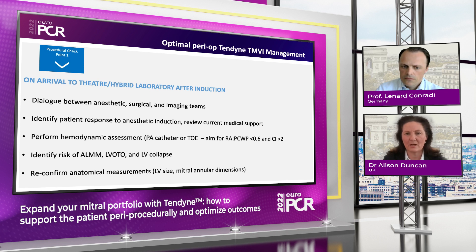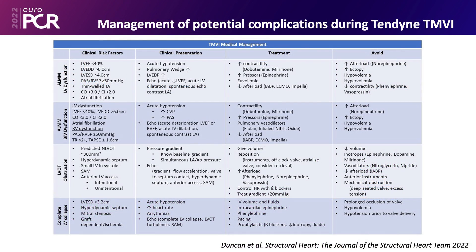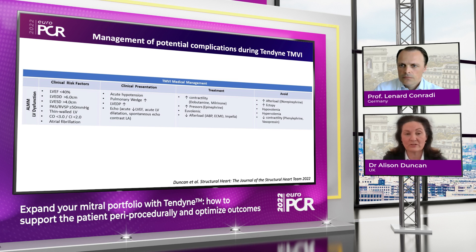We really specifically need to identify those patients' risks of potential complications. Those complications are afterload mismatch, LVOT obstruction, or potential complete LV collapse. The kinds of patients we'll be thinking of have specific clinical risks, specific treatments, and avoidance strategies. For example, a patient with afterload mismatch is a patient with a big ventricle, a poorly functioning ventricle with a cardiac output less than 3 or cardiac index less than 2, particularly worse if they've also got coincidental right ventricular dysfunction.